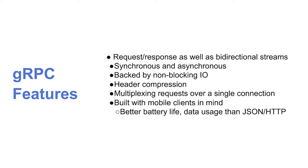gRPC gives you a request-response scalar architecture — pass a single request, get a single response. But it also supports a streaming style, streaming data back and forth using HTTP2. It's bidirectional, which is really powerful when you need a constant conversation between two services. A great example is health checking — instead of pinging a service every second, you open one connection and say 'just tell me if something goes wrong.' Those responses stream in — much more efficient.